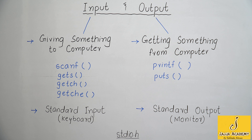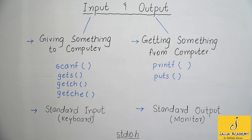The header file where standard input and standard output functions are stored is known as the standard input output header file: stdio.h. 'std' stands for standard, 'i' for input, 'o' for output, and 'h' for header file. To input or output data, we have to include the standard input output header file into our C program.